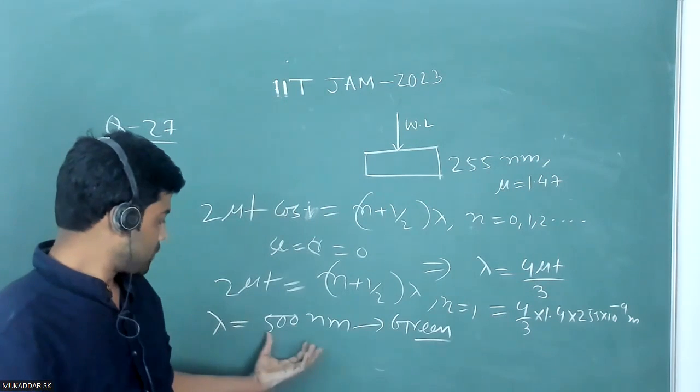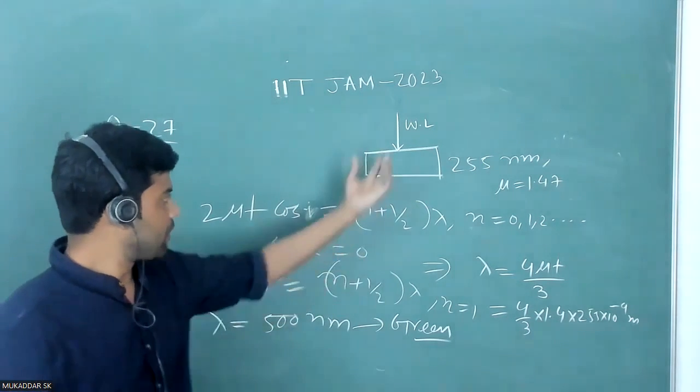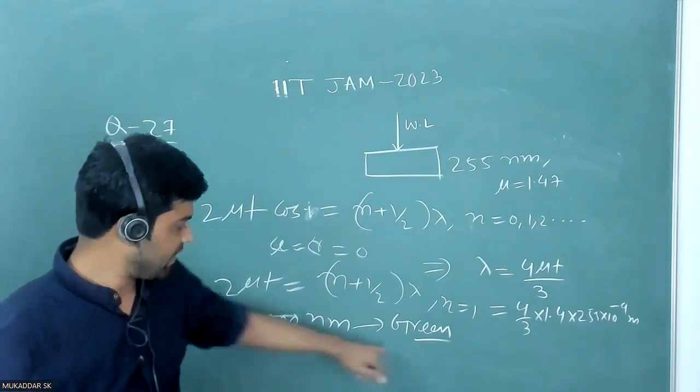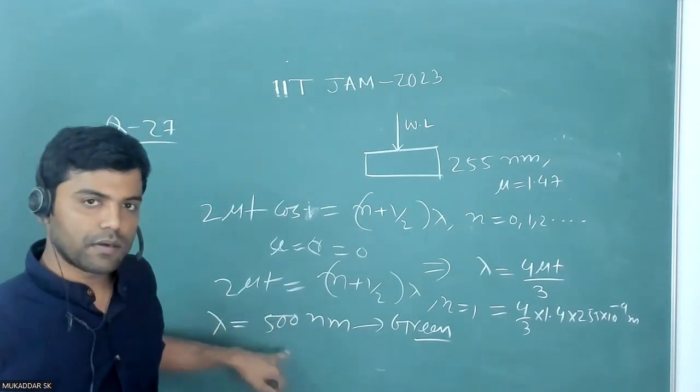So this will be the option: the wavelength of interfered light that will be dominated will be green having wavelength 500 nanometer.